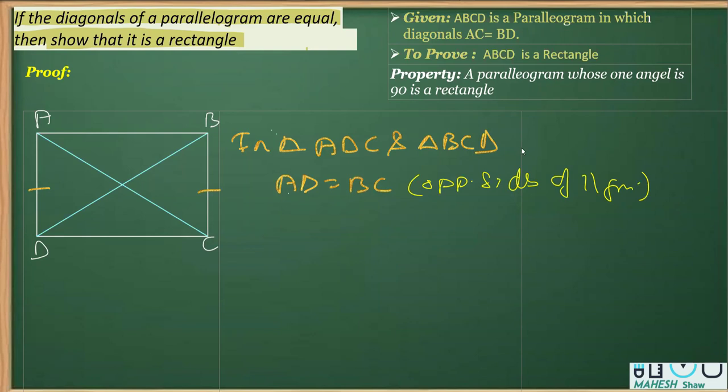Now we can even write DC is same as CD. This is a common side. And what else we know is that AC is equal to BD, that is given to us. This is AC and this BD are given equal.